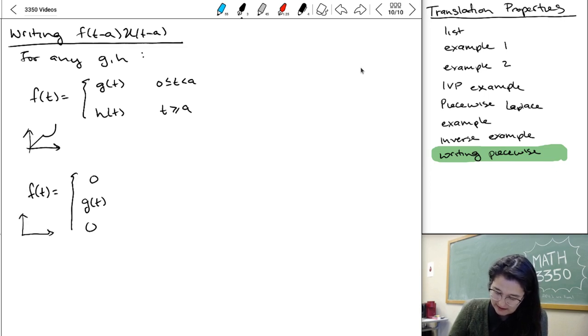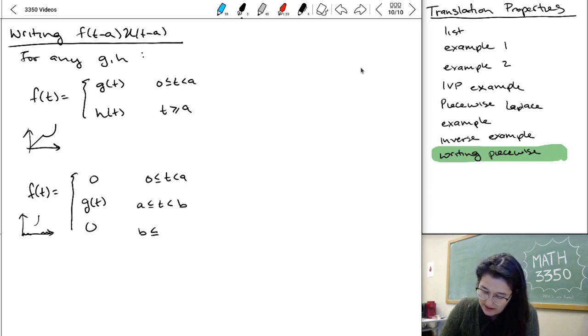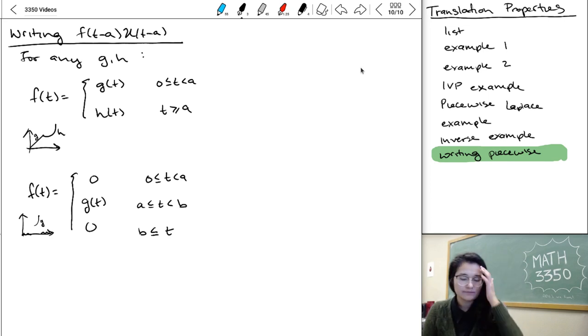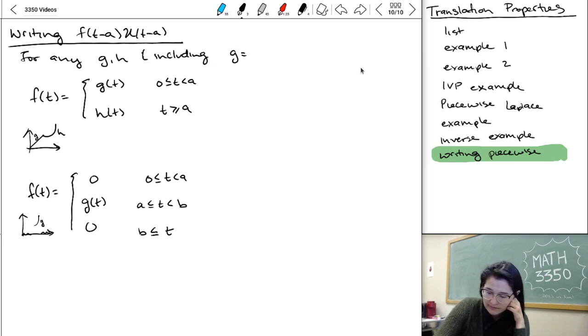So this first one was like, it's that and then it's that. And this example is like, it's zero and then something and then zero again. And that change is happening at A to start G and then at B to stop being that function. So these are types of piecewise functions you might encounter and I'd like you to know how to write them down. I will note the formulations we're about to use don't assume that G and H aren't zero.